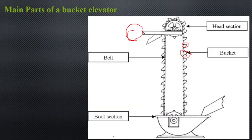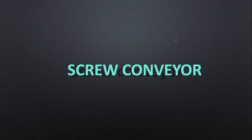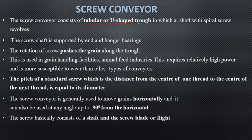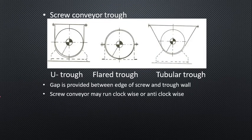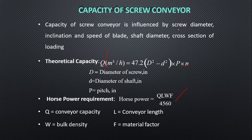The main parts of the bucket elevator include the head section, bucket, belt, foot section, and leg section, with pulleys playing an important role in transporting from feed to discharge. The screw conveyor generally consists of a tubular and U-shaped trough; the types are U-trough, flap-trough, and tubular trough. Capacity is calculated theoretically using a formula, and horsepower requirement is also determined formulaically, influenced by screw diameter, inclination, speed of blade, shaft diameter, and cross-section loading.